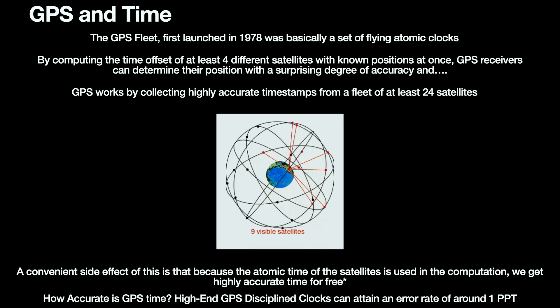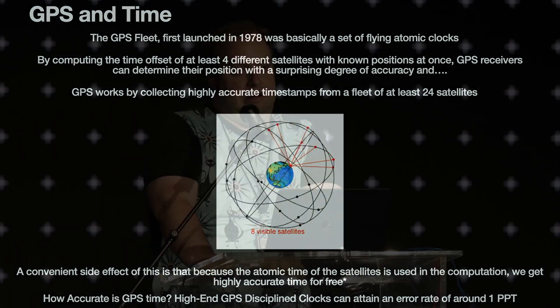A good high-end GPS disciplined clock can retain an error rate of around one part per trillion — that 32 million years number again. GPS didn't used to be that good. For military strategy reasons they degraded the quality until the 90s, when Bill Clinton freed GPS for everyone to use at full accuracy. It used to be within 20 meters so you couldn't use it for nefarious purposes, but people found workarounds. They were basically rounding off eight bits of precision, preventing precise location. Nowadays they've given you full precision, and there are also more and fancier satellites.